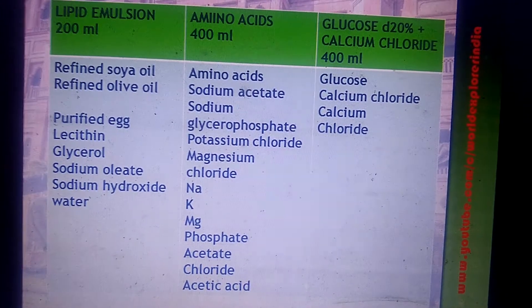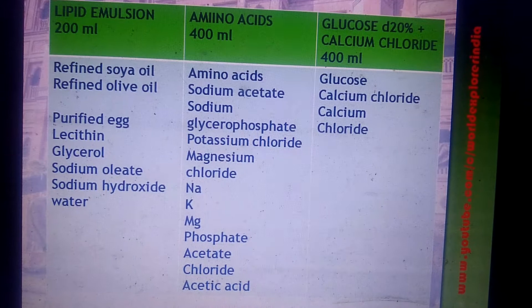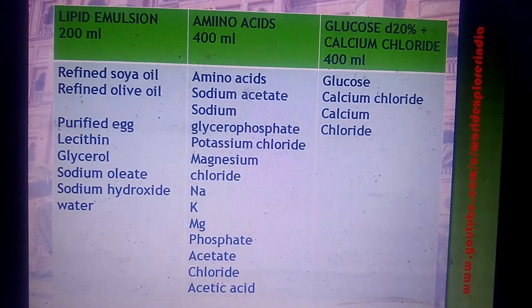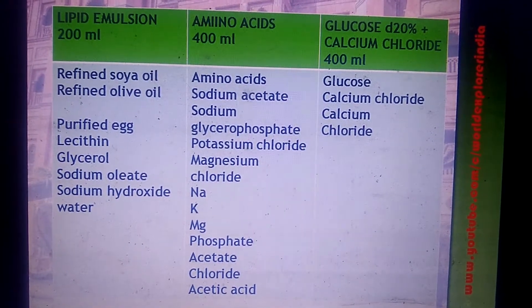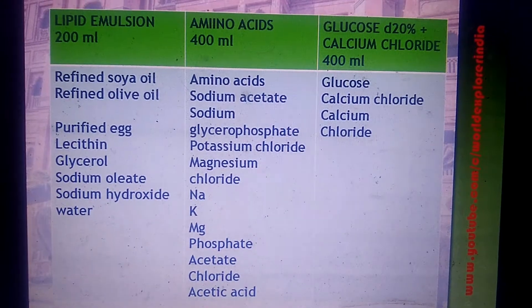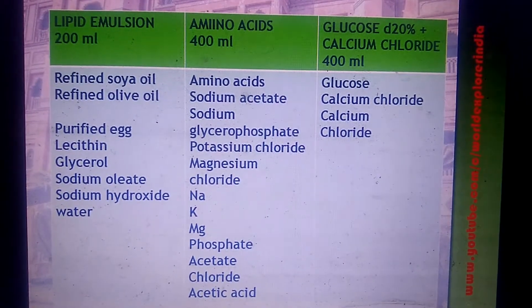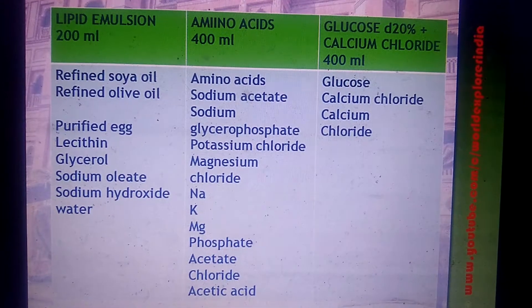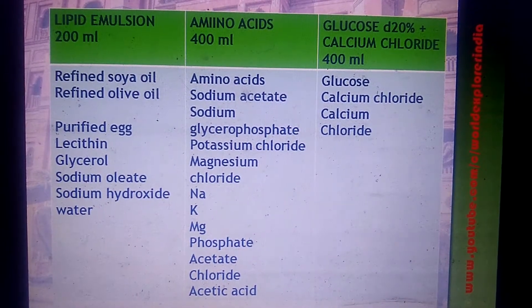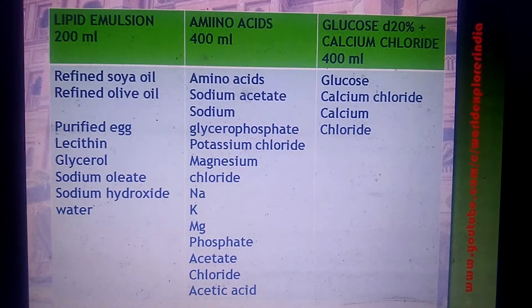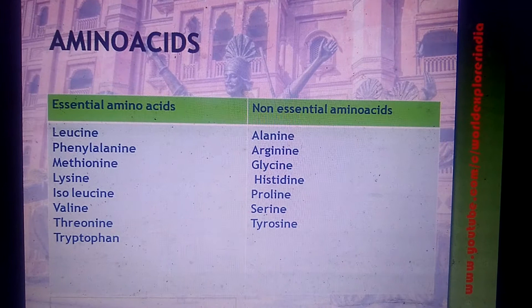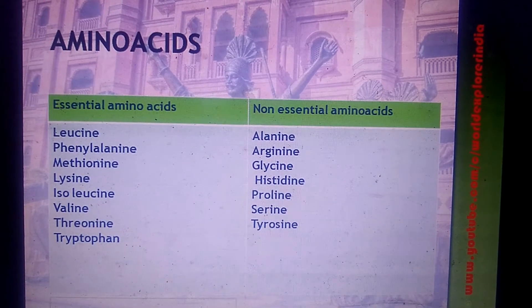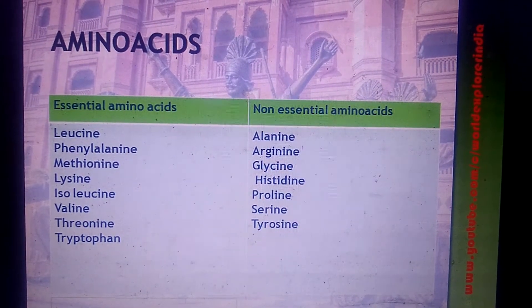The electrolytes in TPN include sodium, potassium, magnesium, phosphate, acetate, chloride, and acetic acid. Glucose is usually D20%, that is dextrose 20%. Calcium chloride is also included. Both essential and non-essential amino acids are included in the TPN formulation.